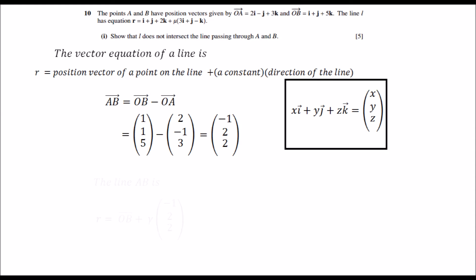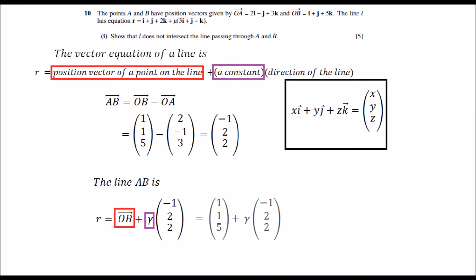Therefore, the vector equation is R equals the position vector OB vector plus scalar constant gamma times the direction. There are two position vectors out of which you can pick any. I have used OB vector. You can also use OA vector. And to denote the constant, I have used the Greek letter gamma. Now let's substitute the value of OB vector. And we have calculated successfully the vector equation of line AB.